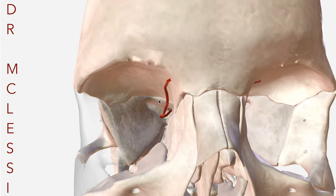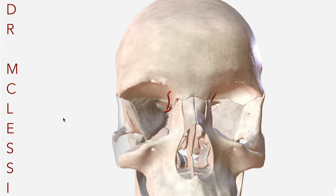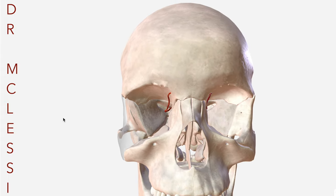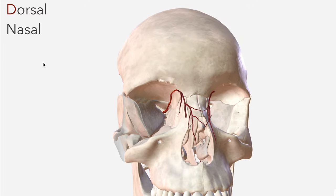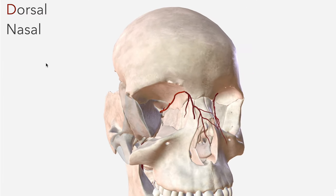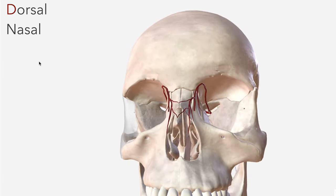We commence with one of the terminal branches of the ophthalmic — that is the dorsal nasal artery, which as its name suggests courses over the dorsum of the nose.